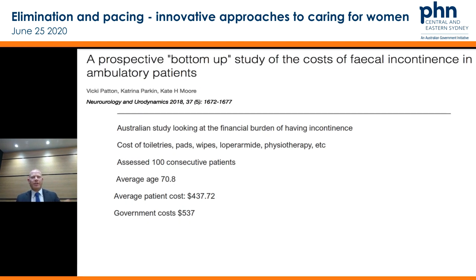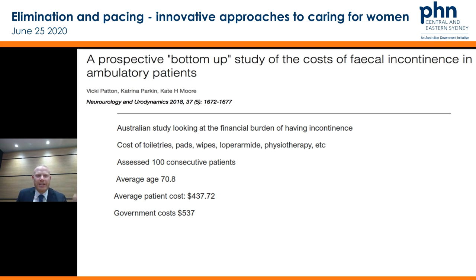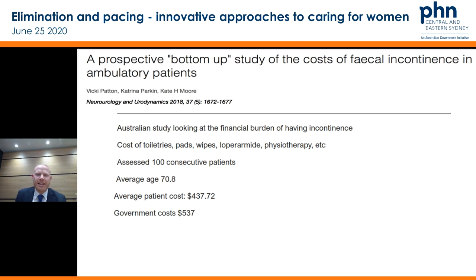This is an Australian study done in Sydney looking at the cost to people when they are incontinent. It looked at 100 patients — average age about 70 — just looking at how expensive it is to pay for toiletries, pads, wipes, gastro stock, and physio visits. The average yearly cost is about $430 for the patient and the government cost is about $530. Obviously there's a fairly significant burden.